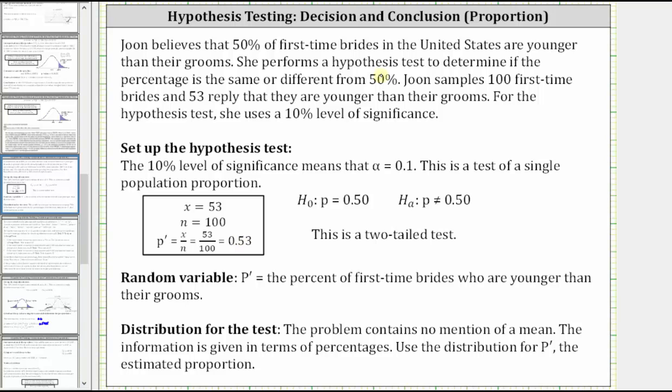Because she is testing to determine if the percentage is the same or different from 50%, the alternative hypothesis is P doesn't equal 0.50 and therefore the null hypothesis is P equals 0.50. Notice because of the not equals here, we will have a two-tailed test.